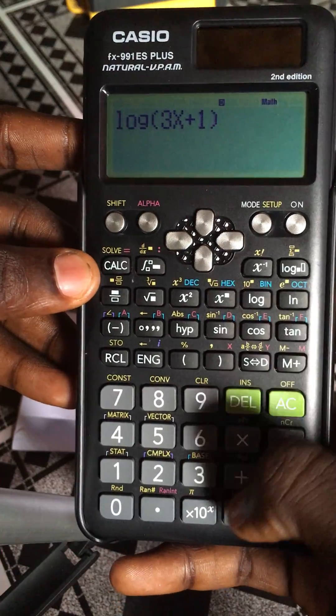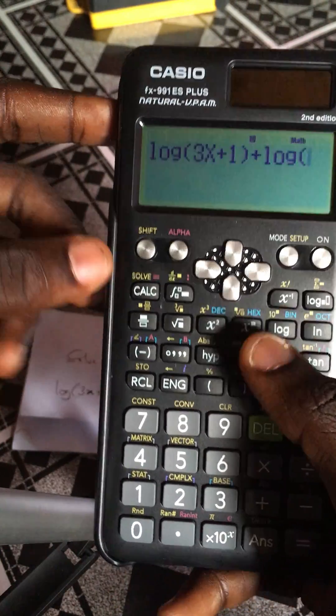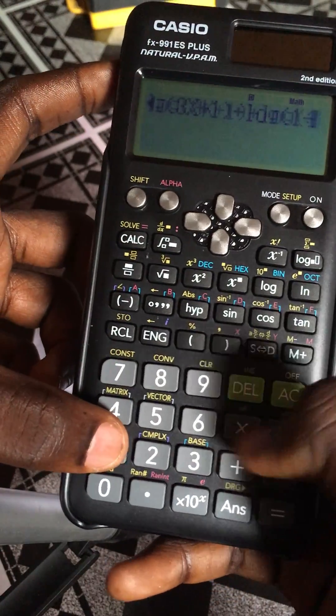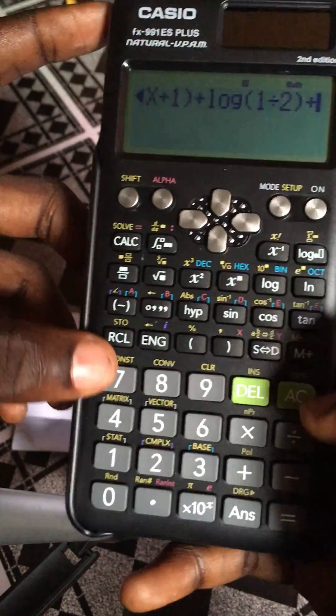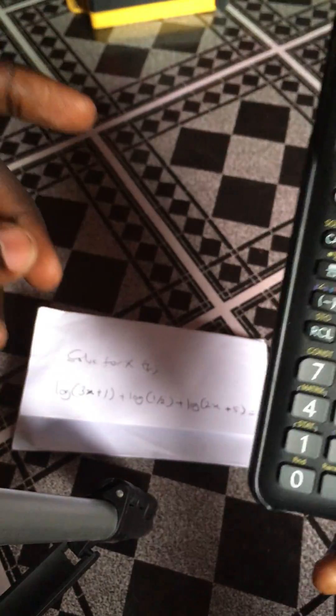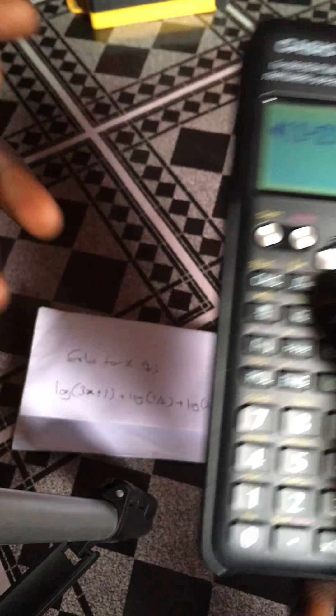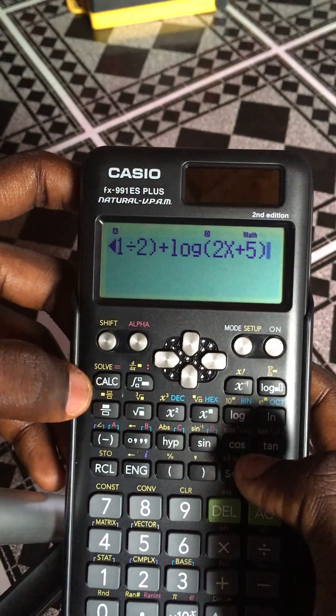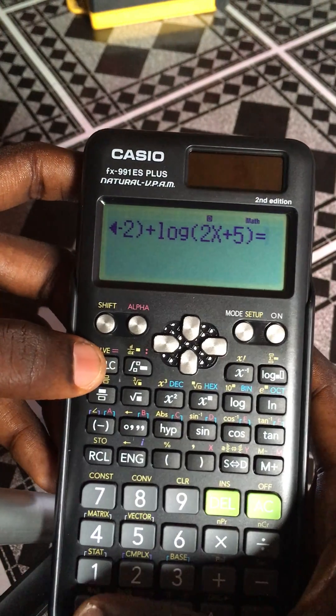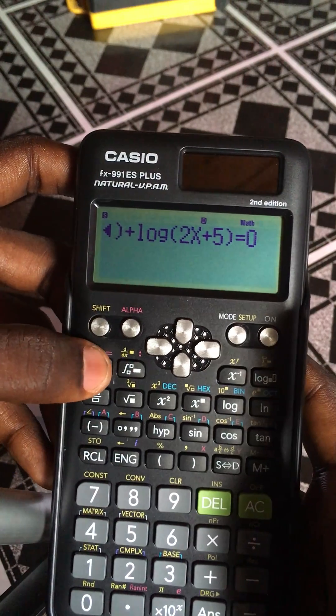Plus log 2x plus 5, close bracket. Then calc, equals to 0. Then you press the shift and calc, which is solve. It tells us solve for x.